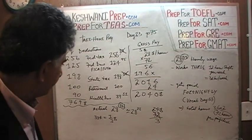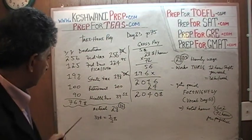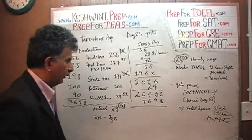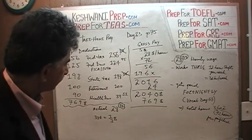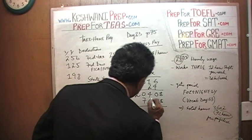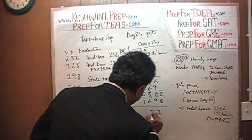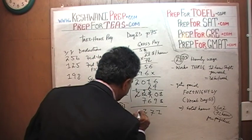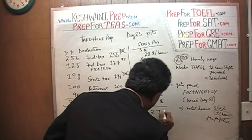Now let's do the deduction. The gross salary is $2,040 and the deductions are $769. Subtracting: 10 minus 9 is 1; this becomes 3; 13 minus 6 is 7; this becomes 9; 9 minus 7 is 2; and 1. The take-home pay is $1,271.